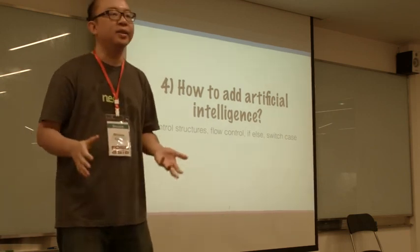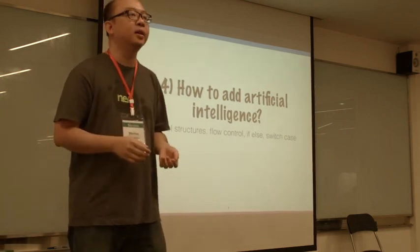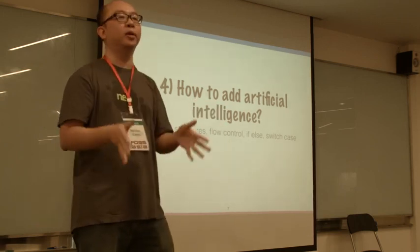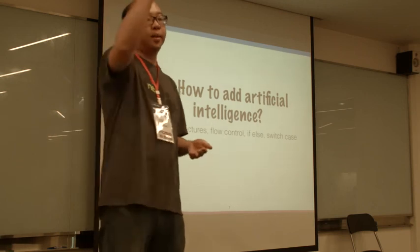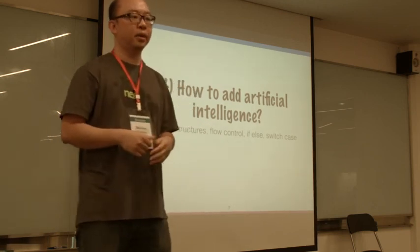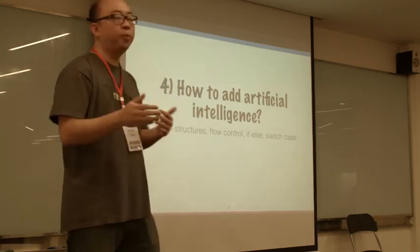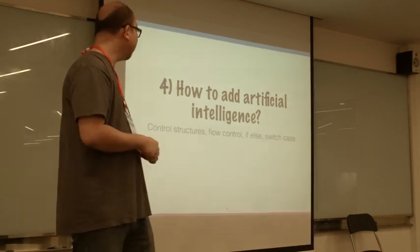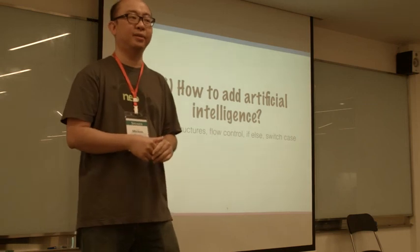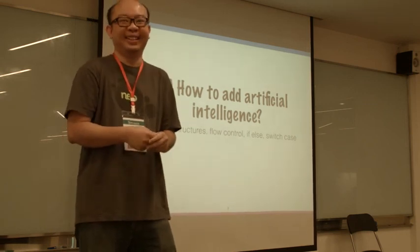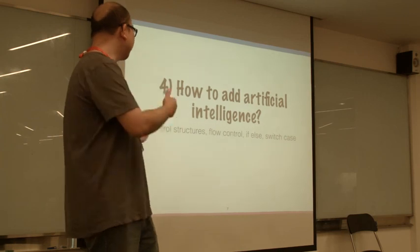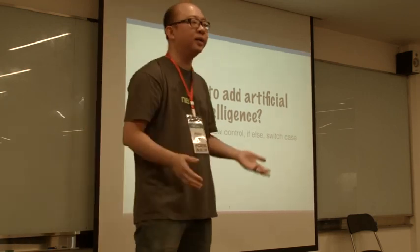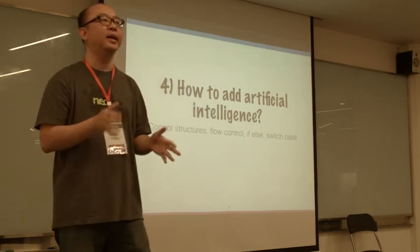Number four: how do you add artificial intelligence? Stuff like if-else, control structures — how do you control the flow of the code? Code usually reads top to bottom sequentially. How do you break the flow such that you skip certain parts of the code? In any programming language you should have flow control: if-else statements, switch cases and stuff like that. Learn how to do that in that particular language.